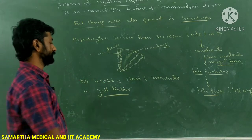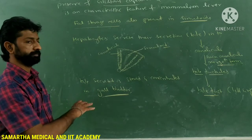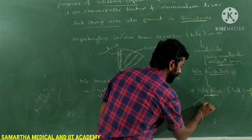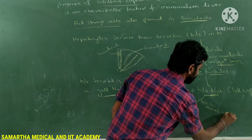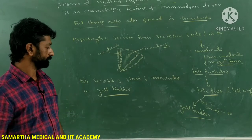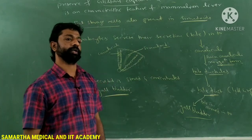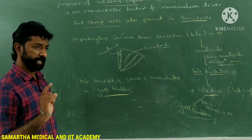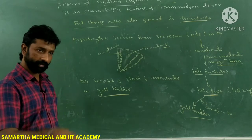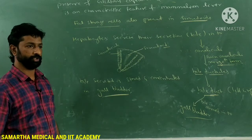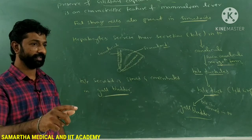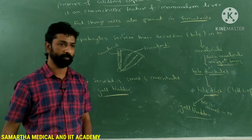From the gallbladder, a duct arises called the cystic duct. The cystic duct, along with the duct that arises directly from the liver — called the hepatic duct — together forms the common bile duct, also called the hepatocystic duct.